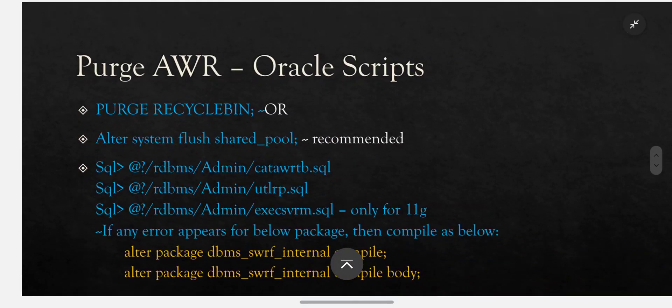If the SELECT is showing you one or two tables, you can drop these tables using the DROP TABLE CASCADE CONSTRAINTS command. After that, run PURGE RECYCLEBIN; or you can type: ALTER SYSTEM FLUSH SHARED_POOL; — it is recommended and flushing the shared pool will not cause any issue to already connected users.